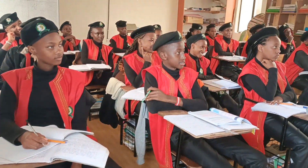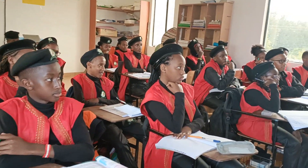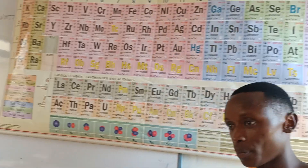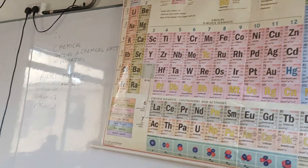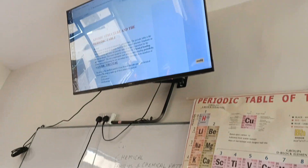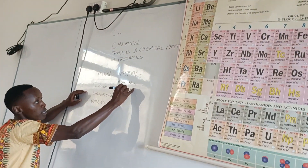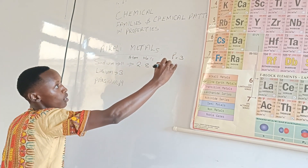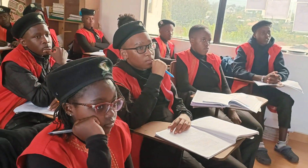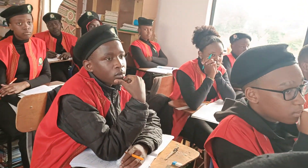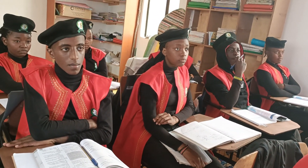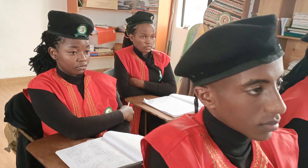Let's look at the electron configuration of sodium: 2,8,1. That tells you sodium is in period number 3. For the group number, we said the group must be shown with a Roman numeral. So the electron configuration of sodium gives group number I — writing it as '1' in Arabic numerals would be wrong; it must be in Roman numerals.